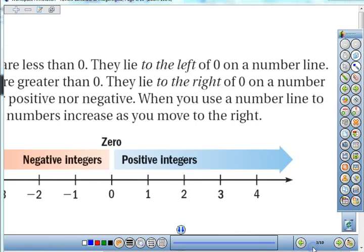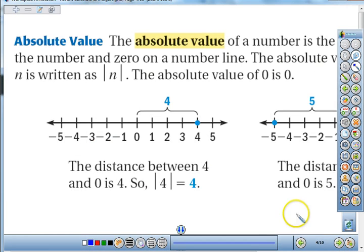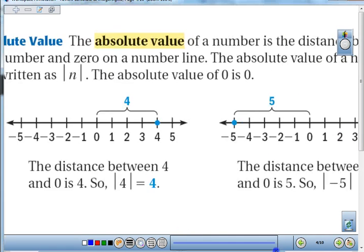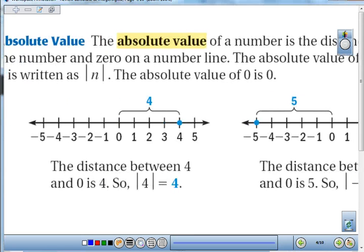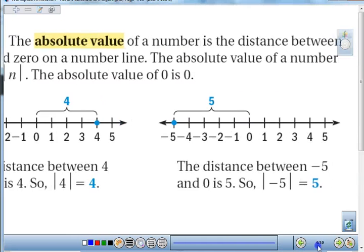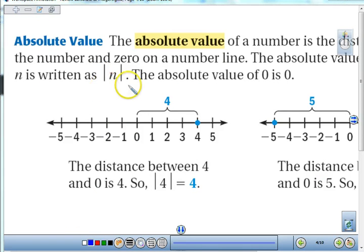The numbers increase as you go to the right and decrease when you go to the left. When we talk about absolute value, the absolute value of a number is the distance between that number and zero on a number line. Absolute value is written as absolute value of n. The absolute value of 4 equals 4; it's 4 units away.